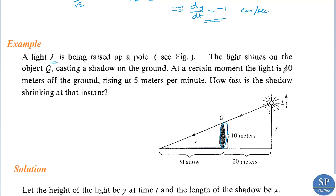At a certain moment, the light is 40 meters off the ground, rising at 5 meters per minute. How fast is the shadow shrinking at that instant? So at that moment, the height of this light is 40 meters and the derivative with respect to time is 5 meters per minute. How fast is the shadow shrinking at that instant?